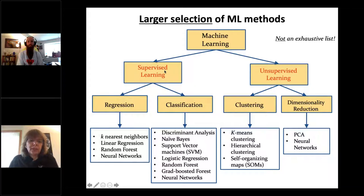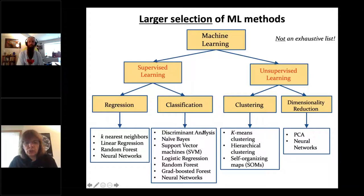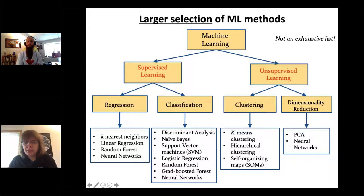Looking at the full list of machine learning algorithms: for supervised regression, there's linear regression, k-nearest neighbors, random forest, and neural networks. For classification: discriminant analysis, naive Bayes, support vector machines, logistic regression, random forest, gradient boosted forest, and neural networks. For unsupervised clustering: k-means, hierarchical clustering, and self-organizing maps. For dimensionality reduction: PCA and neural networks.